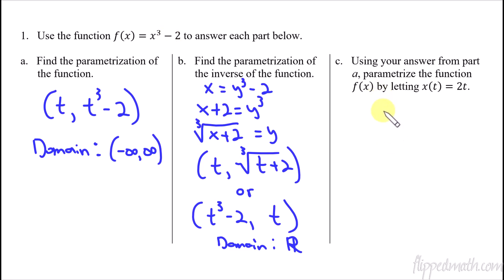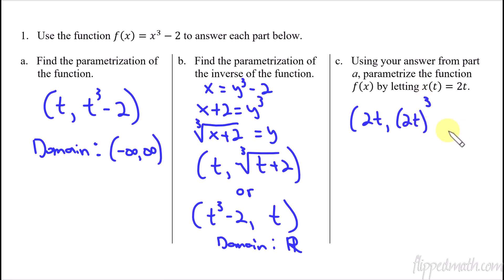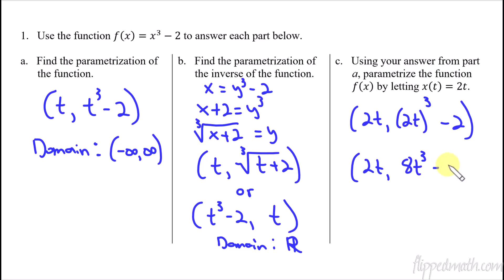The last thing to note is that there are infinitely many ways to write a parametrization. For instance, instead of x of t equals t, if x of t equals 2t, then wherever you see the t value you substitute 2t. So y of t becomes 2t cubed minus 2, which simplifies to 8t cubed minus 2. The parametrization becomes 2t comma 8t cubed minus 2. The graph of this and the original are identical — this just reminds you there is an infinite number of ways to write out a parametrization.